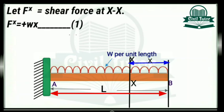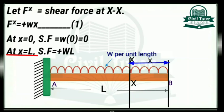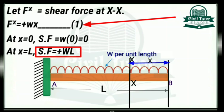Now at point B, the value of X will be equal to 0, so shear force will be equal to W into 0, equal to 0. And at point A, X will be equal to L, so substituting X equal to L in equation 1, we will get shear force equal to plus WL at point A.